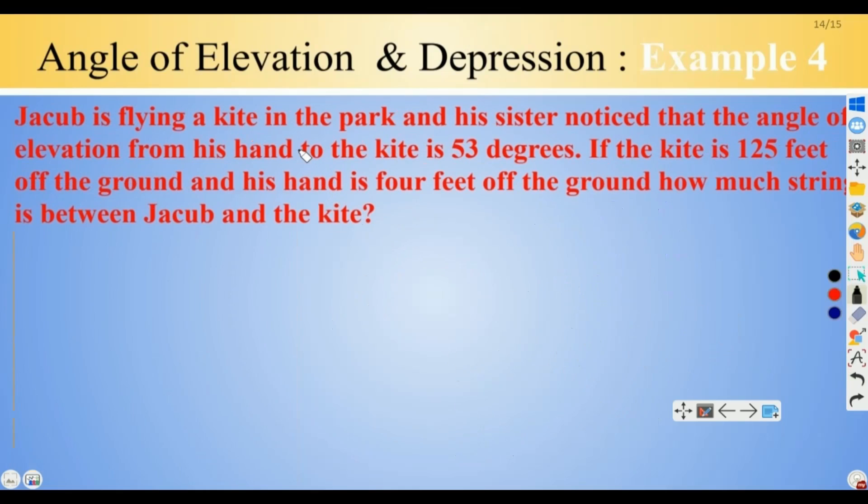Let's solve this now. Jacob is flying a kite in the park and his sister noticed that the angle of elevation from his hand to the kite is 53 degrees. If the kite is 120 feet off the ground and his hand is 4 feet off the ground, how much string is between Jacob and the kite?